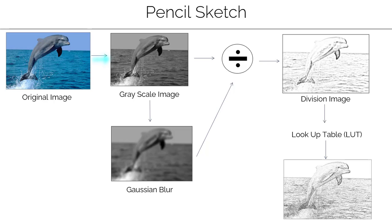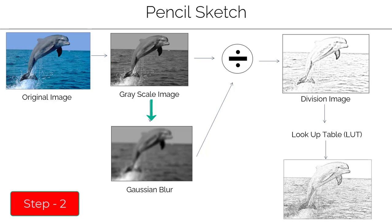Step one: convert the image into grayscale. Step two: blur the grayscale image using any filter. There are many filters that are used to blur the image, like edge preserving filter, median blur, and Gaussian blur. Here I'm using the Gaussian blur filter to blur the image.